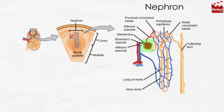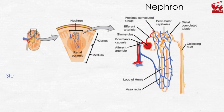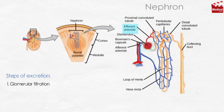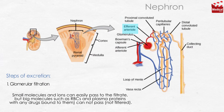The nephron consists of: glomerulus, proximal convoluted tubule, loop of Henle, distal convoluted tubule, and collecting tubule. The first step of excretion is glomerular filtration. Blood goes to the glomerulus through the afferent arteriole to be filtered by diffusion under high pressure in Bowman's capsule, then blood is discharged to the efferent arteriole. Small molecules and ions can easily pass to the filtrate, but large molecules such as RBCs and plasma proteins — along with any drugs bound to them — cannot pass, meaning they are not filtered.